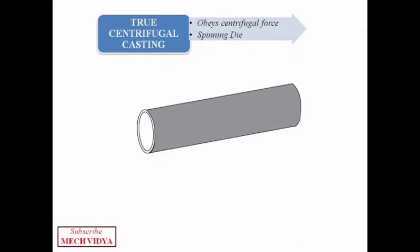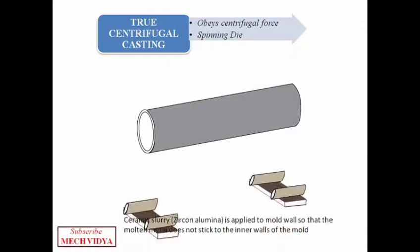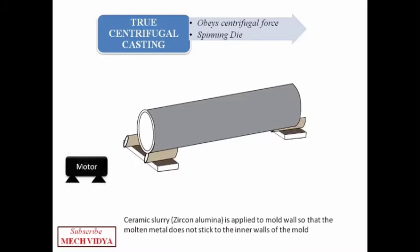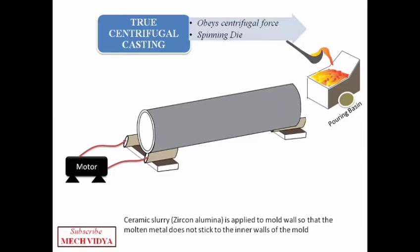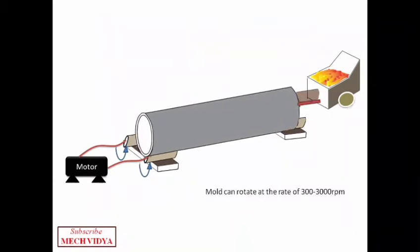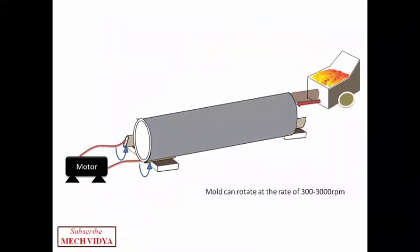In true centrifugal casting, we have a hollow cylindrical mold. This is the mold. The mold is kept over a number of rollers which are then connected to a motor. On the other side, we have the pouring basin in which we have the molten metal poured from the ladle. The molten metal flows into the mold through this pipe. Now the rollers are rotated by starting the motor. As a result, the mold also starts to rotate. The mold can rotate at the rate of 300 to 3000 RPM like this.